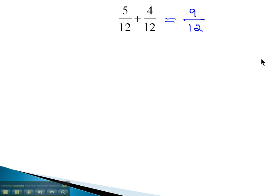We have 9 twelfths. This fraction can reduce because 9 and 12 can both be divided by 3. 9 divided by 3 is 3 over 12 divided by 3 is 4. We have our final solution of 3 fourths.